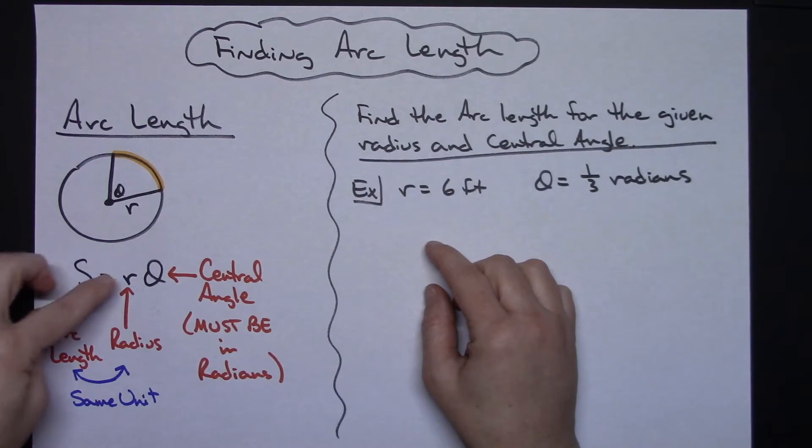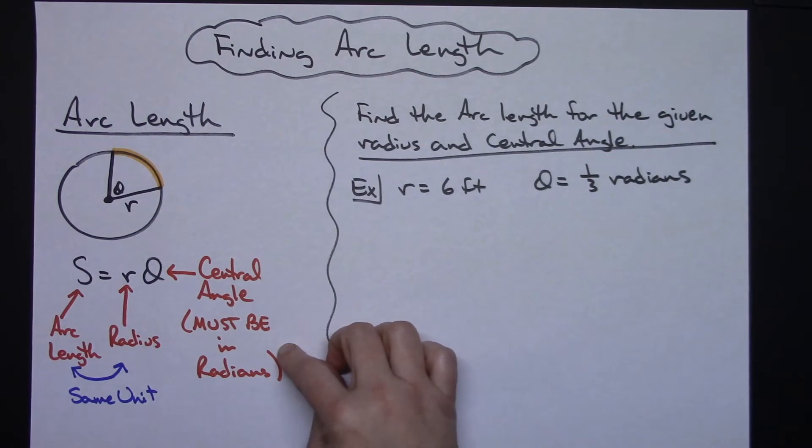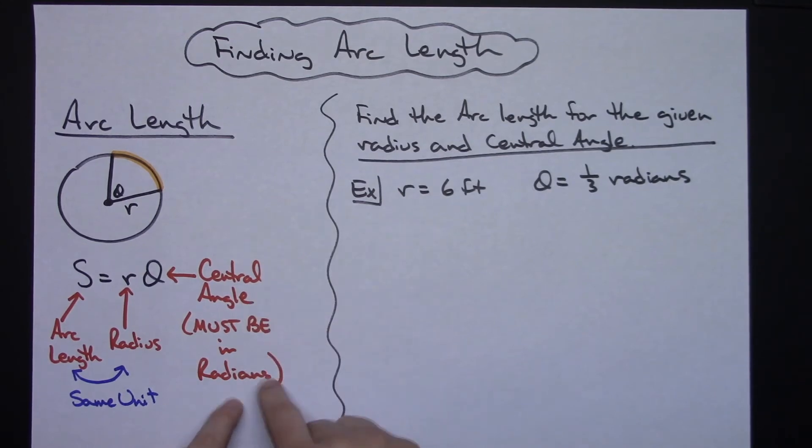Capital S is arc length, r is radius, theta has to be a central angle, and you've got to have it in radian measures. So if you are working in trig and maybe they give the central angle in degrees, then you are going to have to convert that degrees to radians because we need that central angle to be in radians.